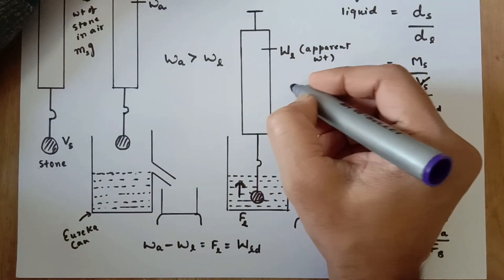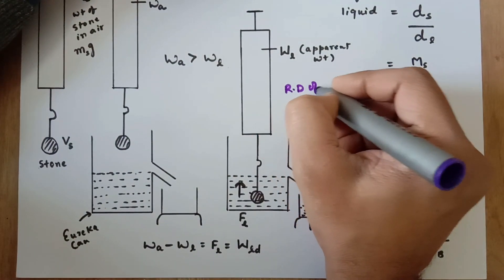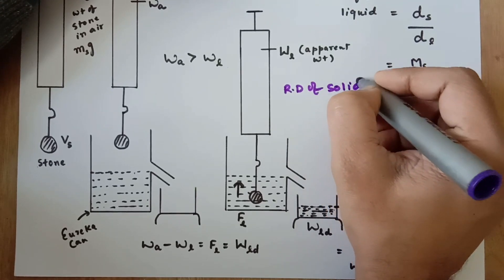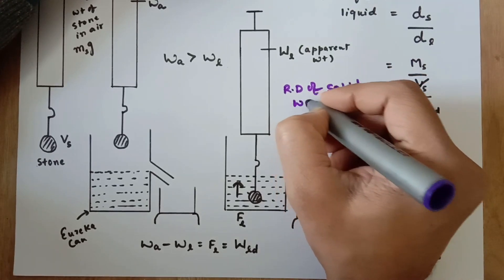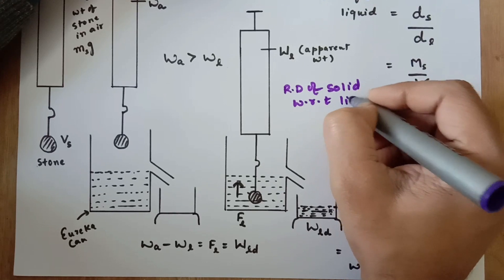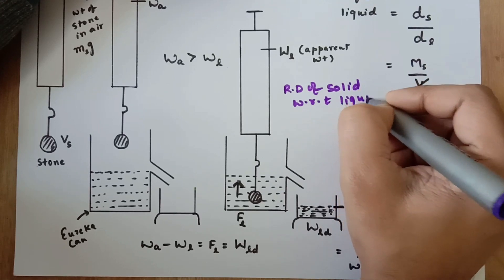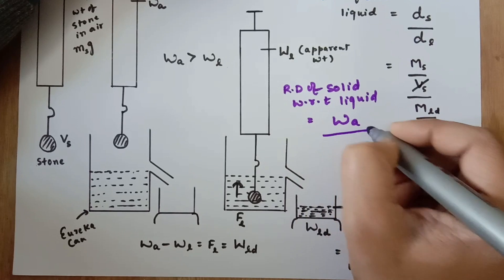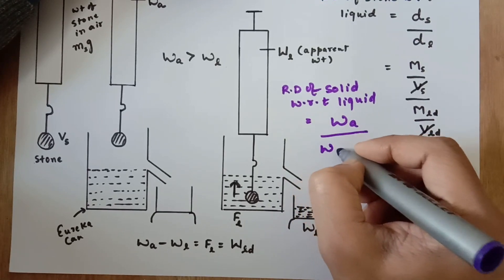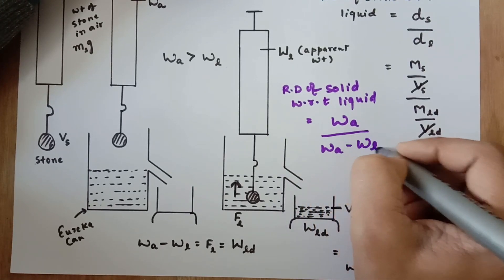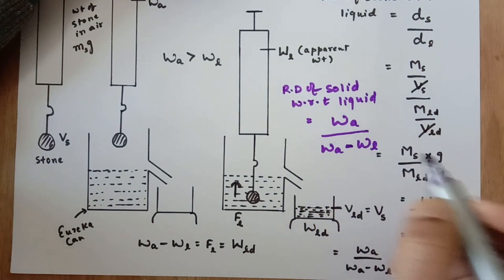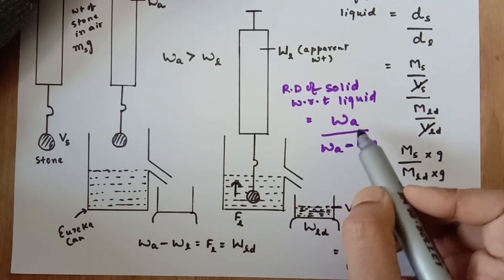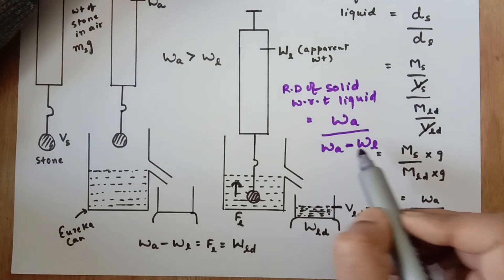So the relative density of any solid with respect to a liquid is equal to weight in air divided by (weight in air minus weight in that particular liquid), which is the apparent weight. You can also remember this simply as weight in air upon the upthrust.